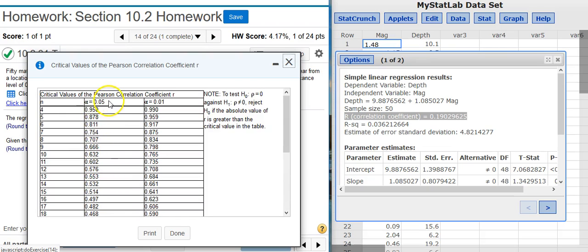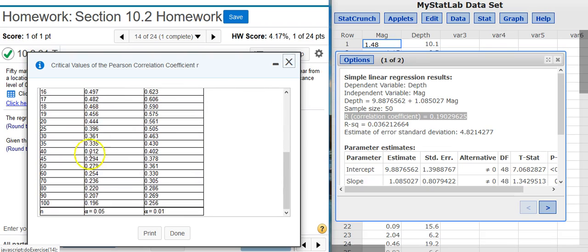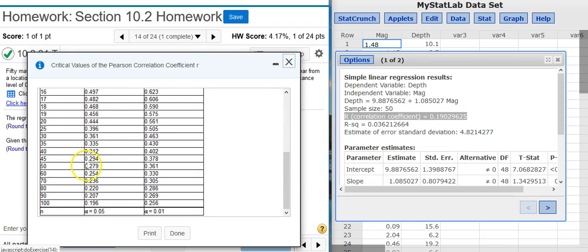And we were told to use a significance level of 5%. So as you can see, that's this column right here. So I go down to find the number next to 50. And here we have 0.279.